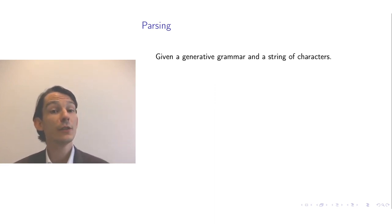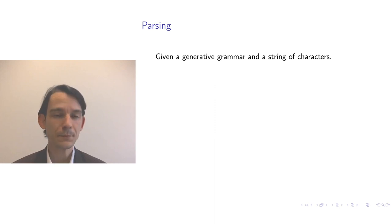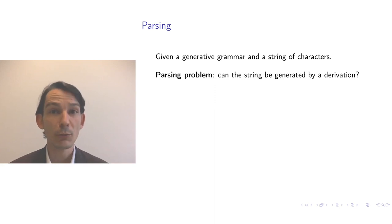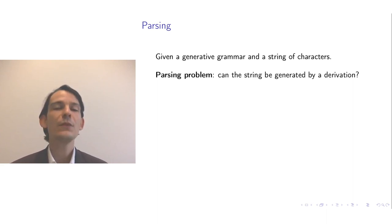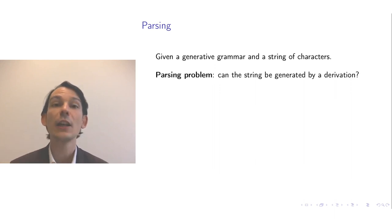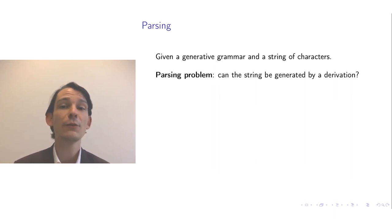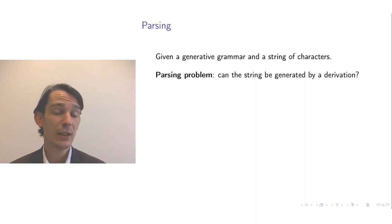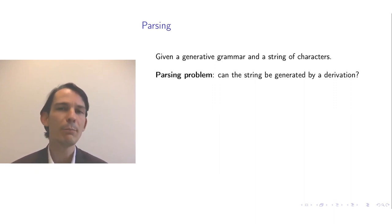Suppose you're given a generative grammar and now you want to check whether a given string of characters — the input to the parser — is actually generated by that grammar. This is the parsing problem: can the string be generated? For arbitrary generative grammars, they induce a recognizable language, so if the string is a sentence in your language, the parser must halt and say yes. But if it is not a sentence, the parser may run forever. So in practice, it's a good idea to restrict ourselves to decidable languages.